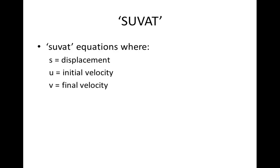These equations are normally dubbed the SUVAT equations. That is because SUVAT is an acronym for the variables which are used in these equations, where S is the displacement, U is the initial velocity, V is the final velocity, A is the acceleration, and T is the time.